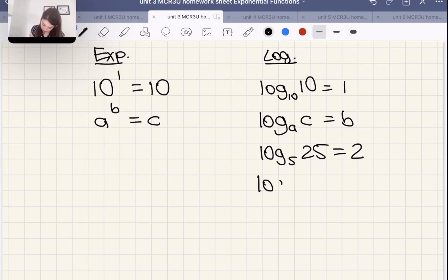What about this? Log with a base 10, 1. 10 to the power of what equals 1? 10 to the power of 0 equals 1. So the answer is 0 here.